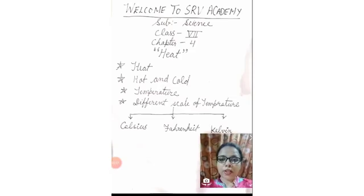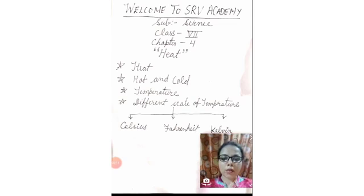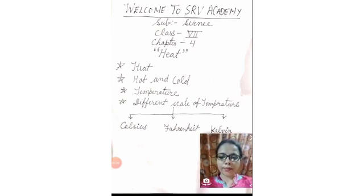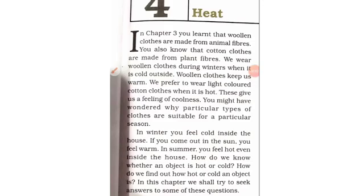Good morning kids, welcome to SRV Academy. Today I am Panna Varma, going to discuss with you the subject Science of Class 7th. This is our fourth chapter, and the fourth chapter is based on heat. In this chapter I am going to discuss with you some points: what do you understand by heat, how we feel hot and cold, what do you mean by temperature, and the different scales of temperature — that is Celsius, Fahrenheit, and Kelvin. Let's start the chapter on heat.